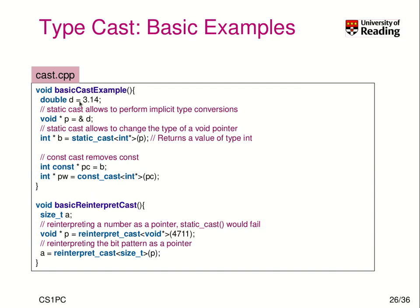Here are some basic examples. We have a double value d and a void pointer p. We can do a static_cast to an integer pointer — after assigning the address to the void pointer we've lost the type, but we can recover it by specifying int* in the static_cast template. If we have a const pointer, we can remove the const using const_cast with the appropriate data type, giving us a plain int* back.